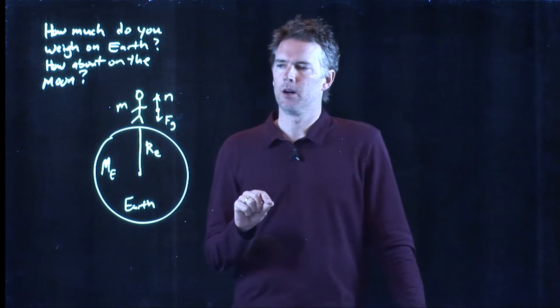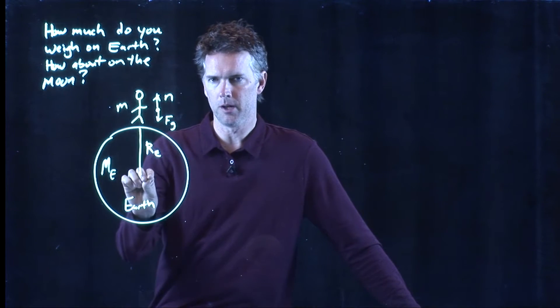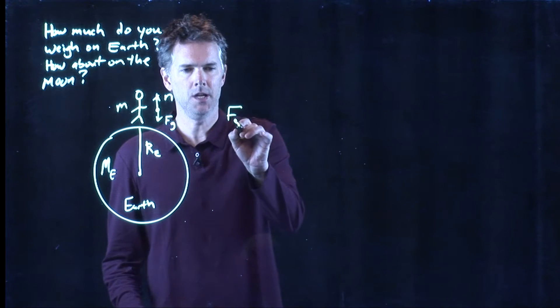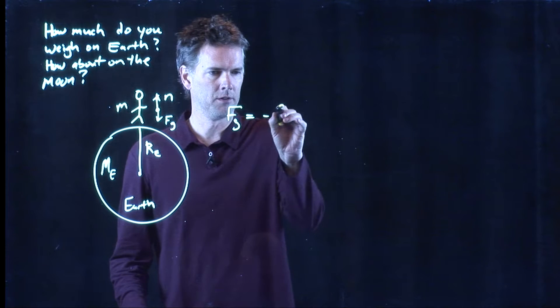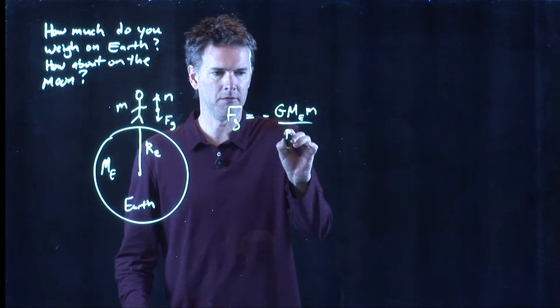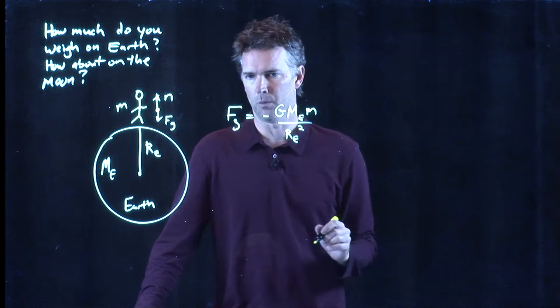What we just saw was gravity, due to the Earth pulling us down, has a force F sub g, which is negative g mass of the Earth, mass of us divided by the radius of the Earth squared.